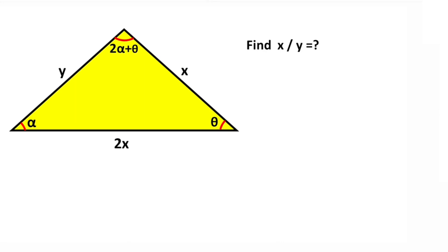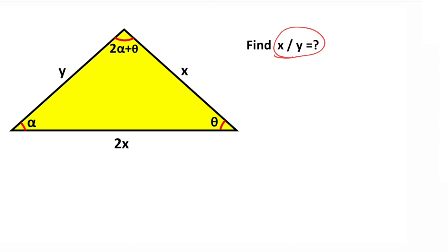Hello everyone. In this video we have one triangle, and the ratio of these two sides is given as 2, one angle is given as alpha, another as theta, and this angle is given as 2alpha plus theta. Here x is given and y is given, so the question is: what is the ratio of x over y?